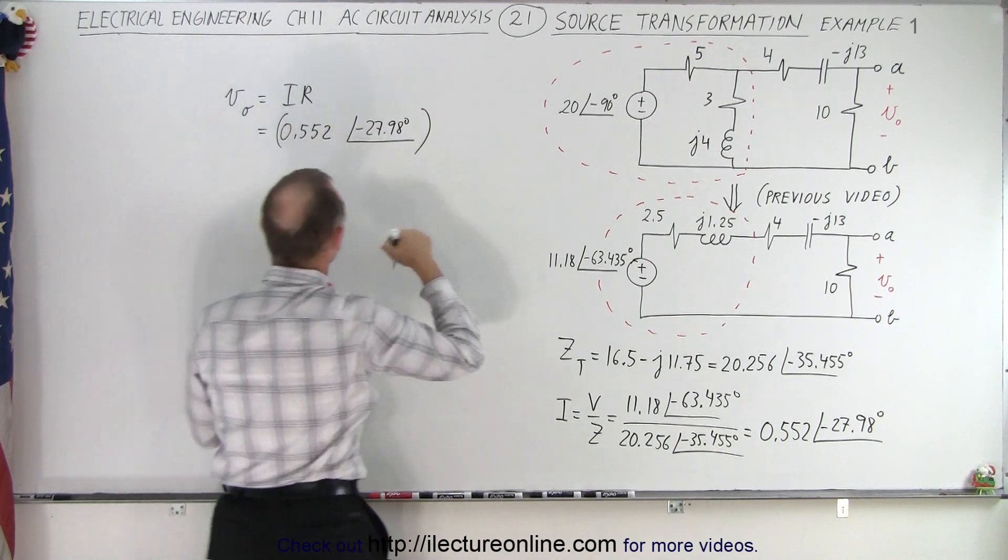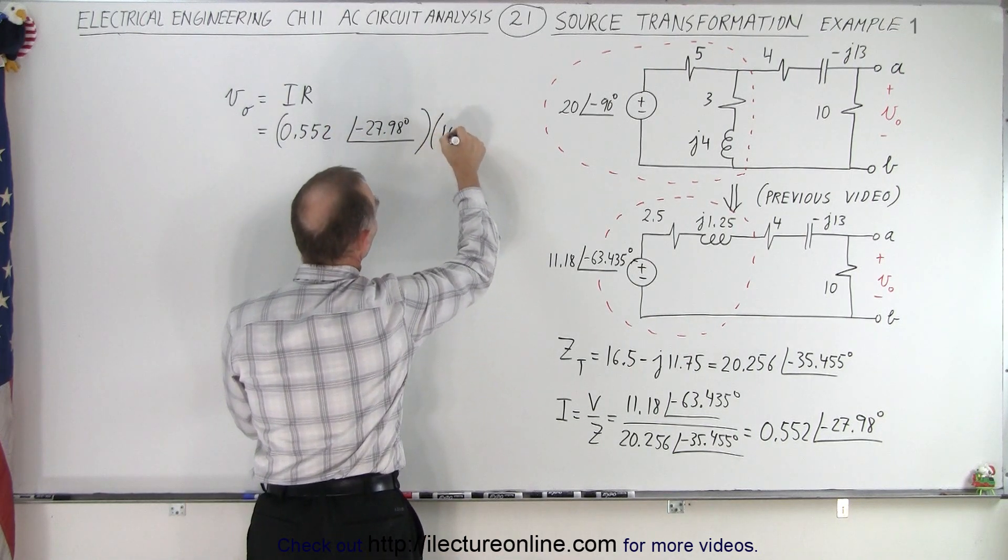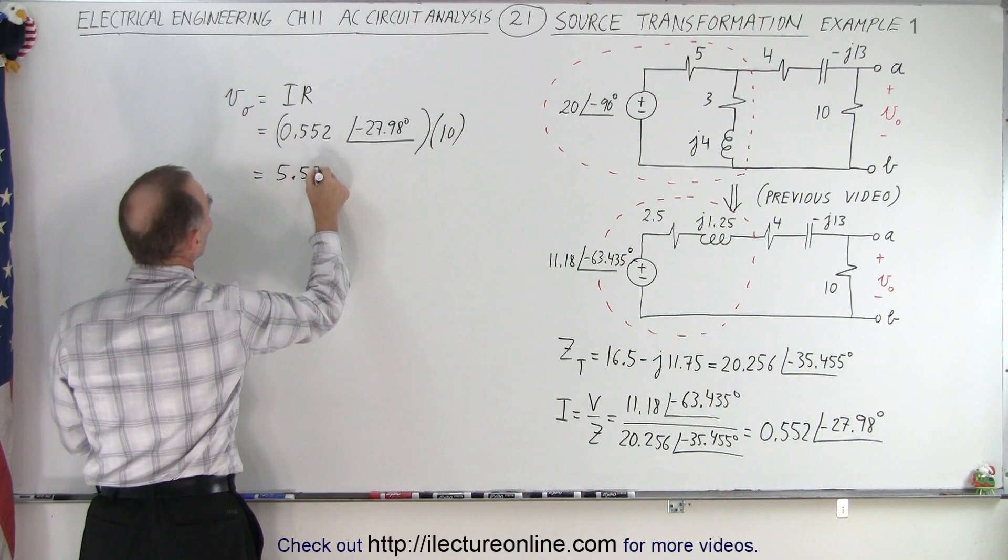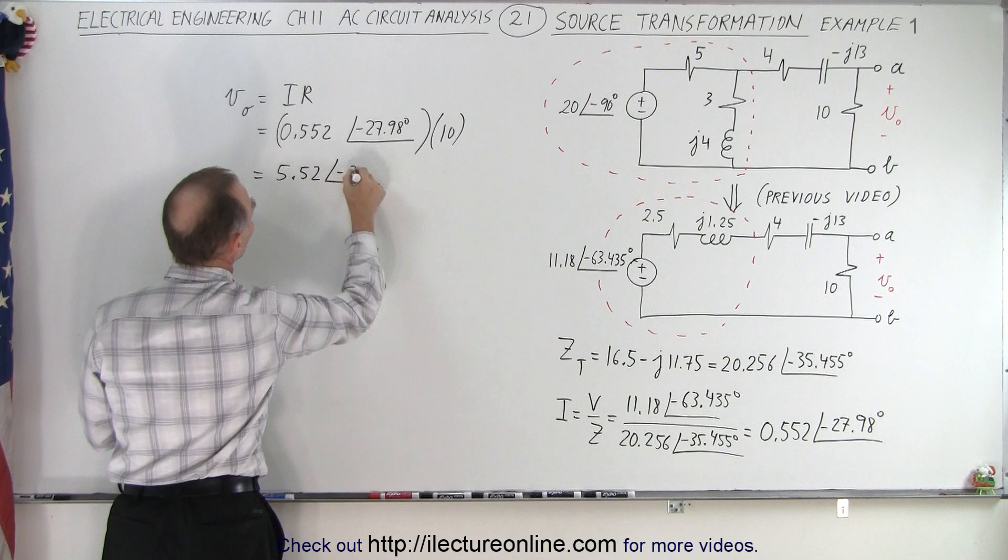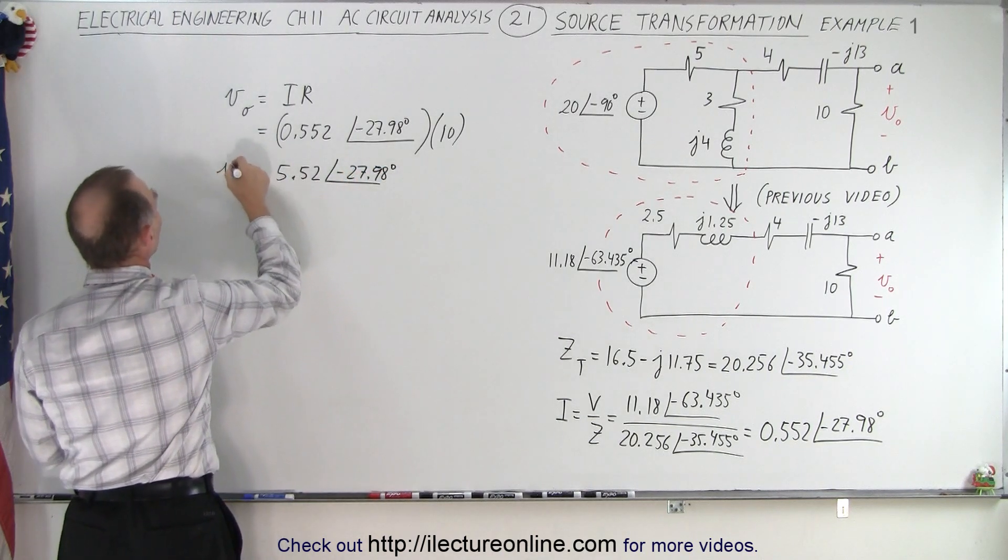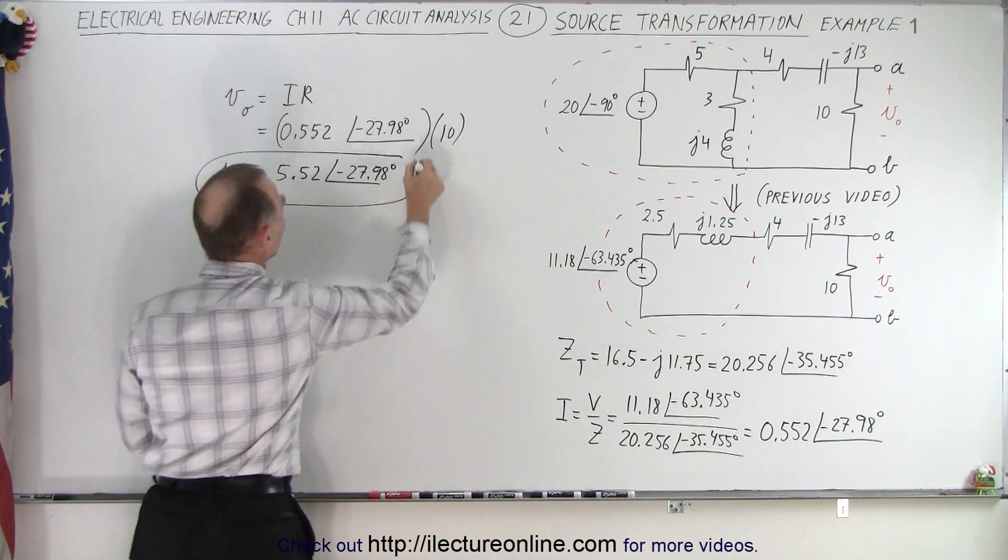Probably just want to go like this. And we multiply that times 10 ohms. And so, it becomes 5.52 with a phase angle of minus 27.98 degrees. And that would be the output voltage across the terminals from A to B.